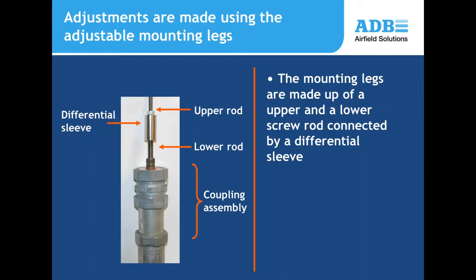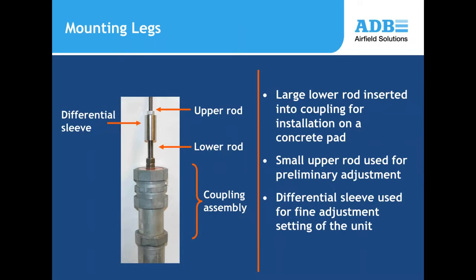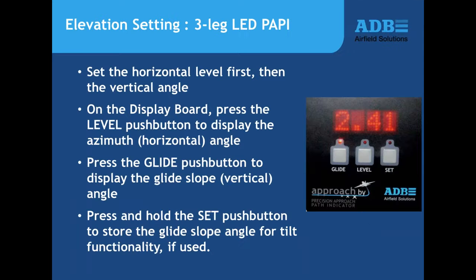Leg adjustment is the same as for halogen PAPI units. Each leg has a lower rod and a smaller upper rod coupled by a differential sleeve. Preliminary adjustment is done using the upper rod assembly at the top, and final adjustments are made with the differential sleeve in the middle. Once the leg is set, lock it down. The external display confirms exactly what the light unit is aligned to at any point in time.